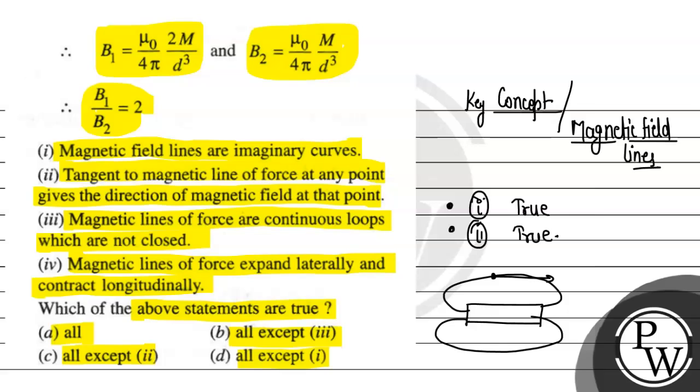Which are not closed, this is wrong. This is closed loop form. And you know that in the passage, the third statement is false.